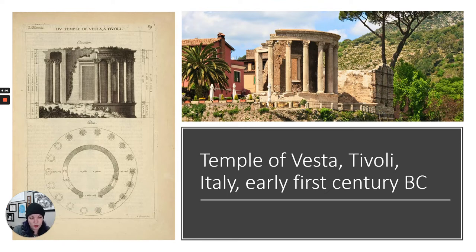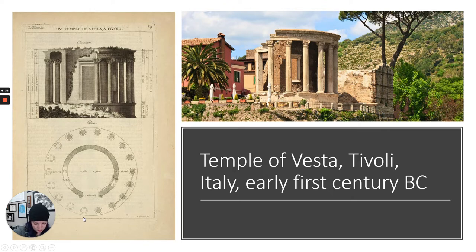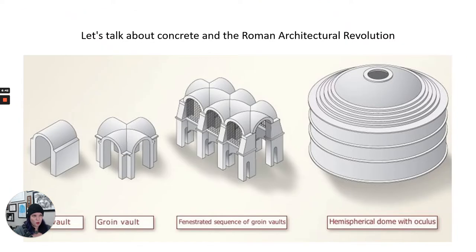It's symmetrical if you slice it vertically, but not horizontally — even though the stylobate goes all the way around and the columns are fully in the round, you can only enter through one way. You can't walk up from all directions like you could with a Greek temple, so there's still only one entryway. This temple is made out of concrete, and we're going to spend some time talking about concrete because it's one of the most important inventions by the Romans.